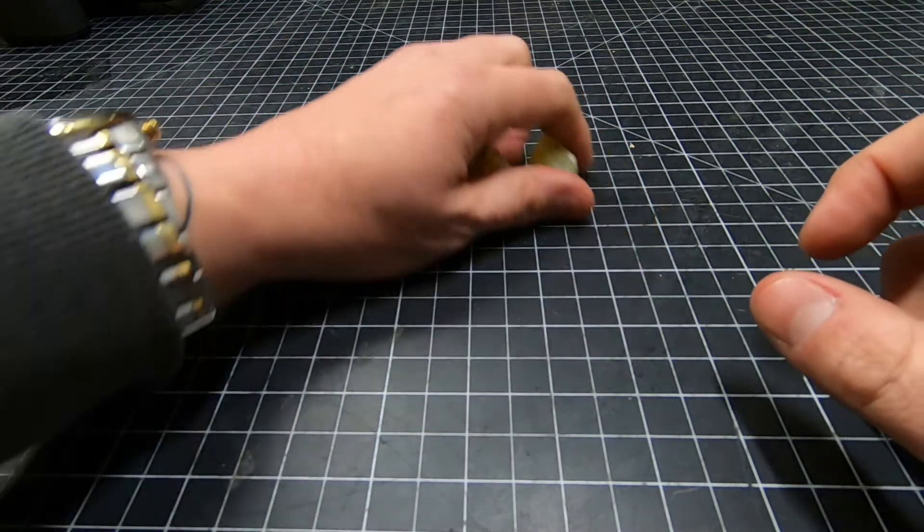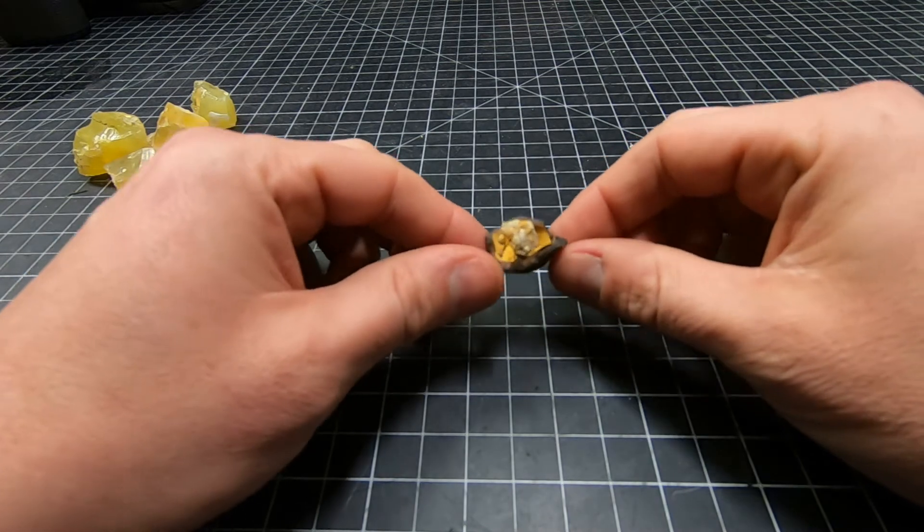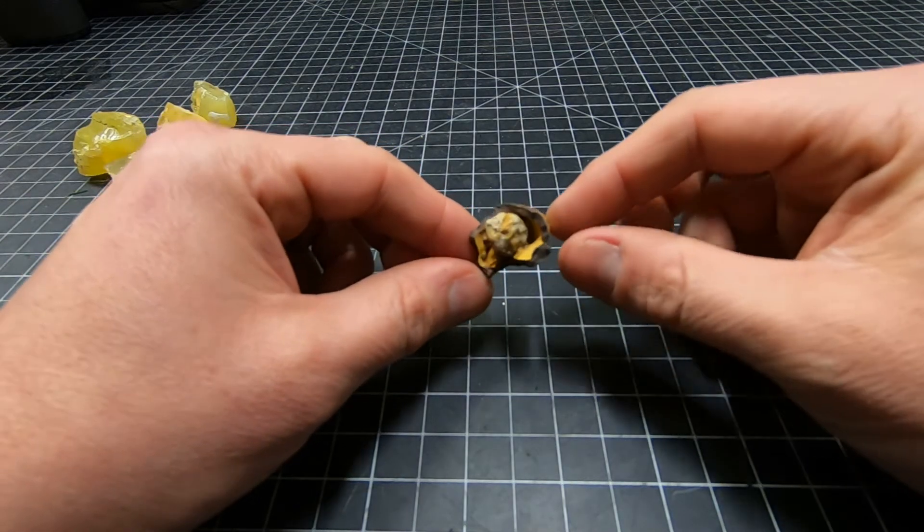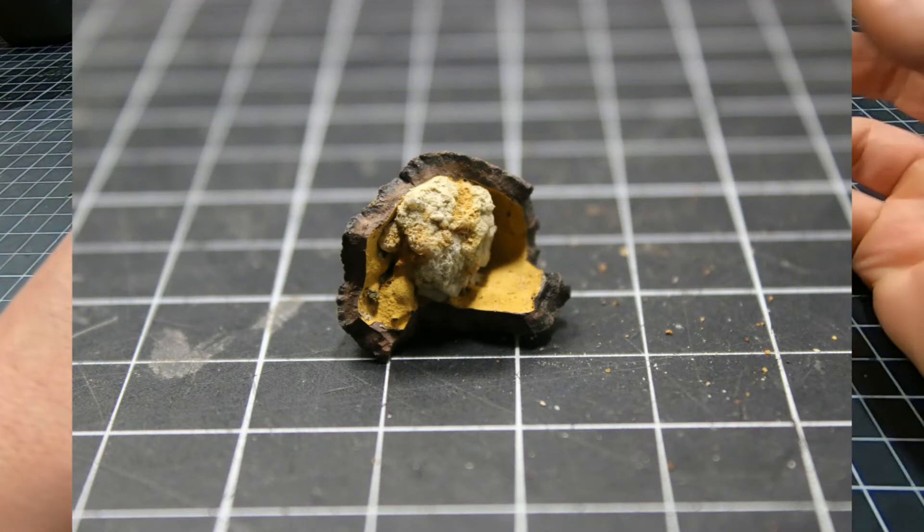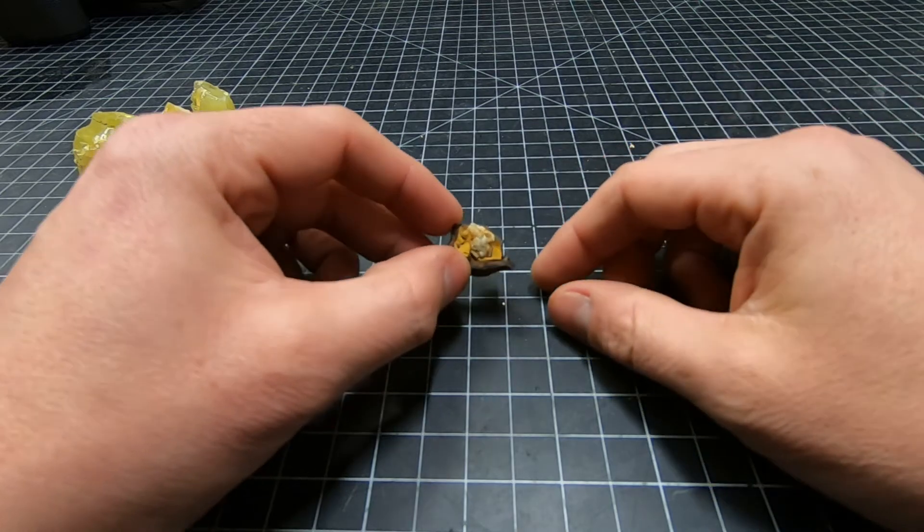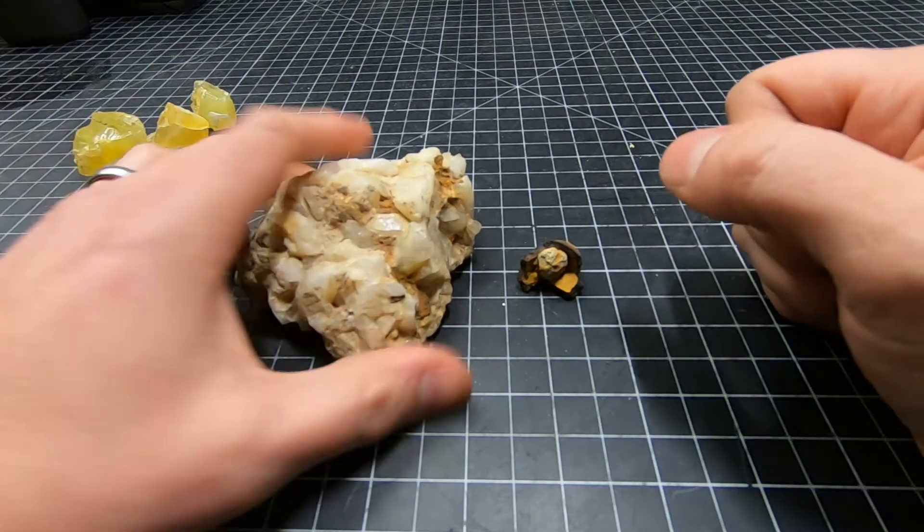One more thing that I'm going to show you here. This right here, I have no clue what this is. This came out of Hanson Creek that is in Western Washington. It is a place known for quartz crystals, things like that, clusters.